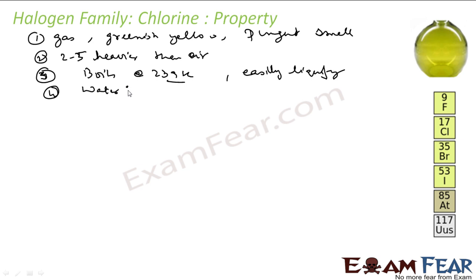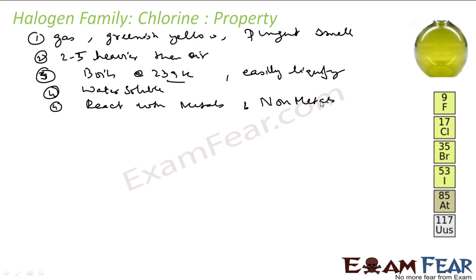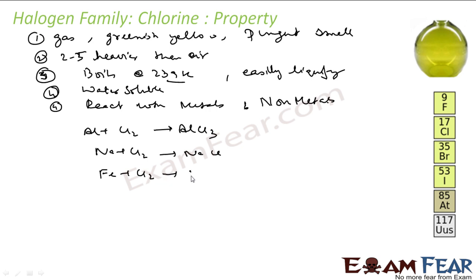Chlorine is water soluble — we have seen it reacts with water. It reacts with a lot of metals and non-metals to form chlorides. For example, aluminum reacts with chlorine to form AlCl3; sodium reacts with chlorine to form ionic NaCl; and iron reacts with chlorine to form FeCl3.